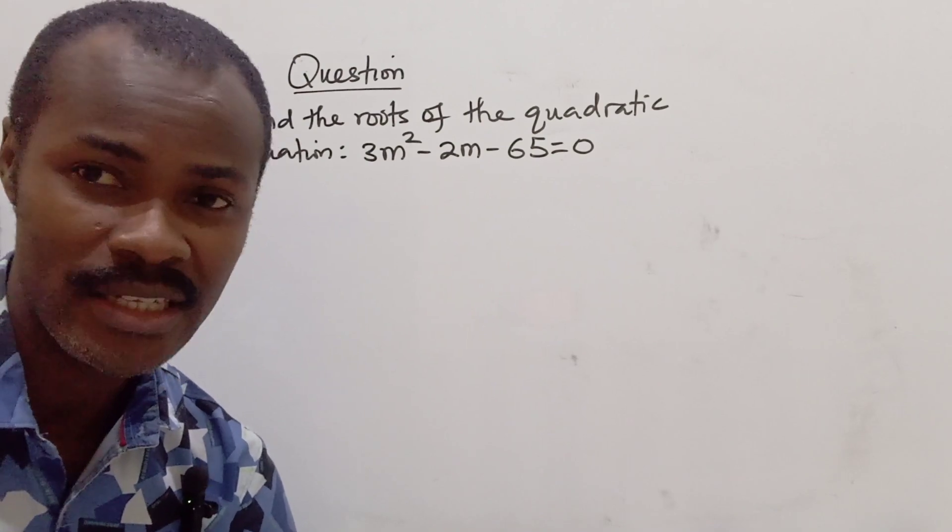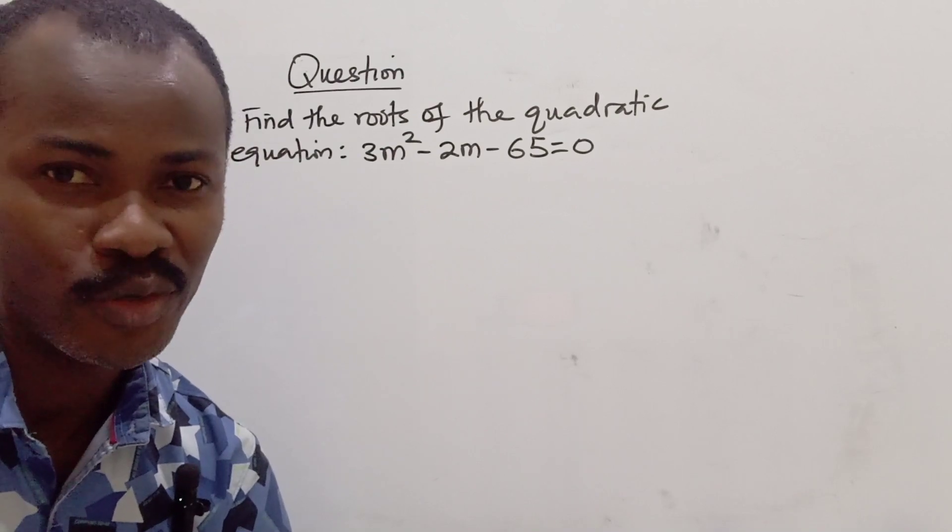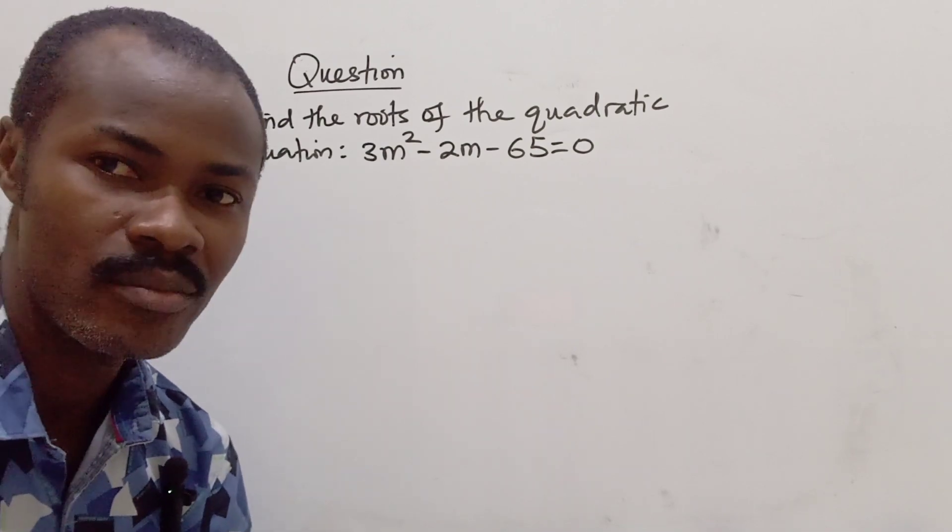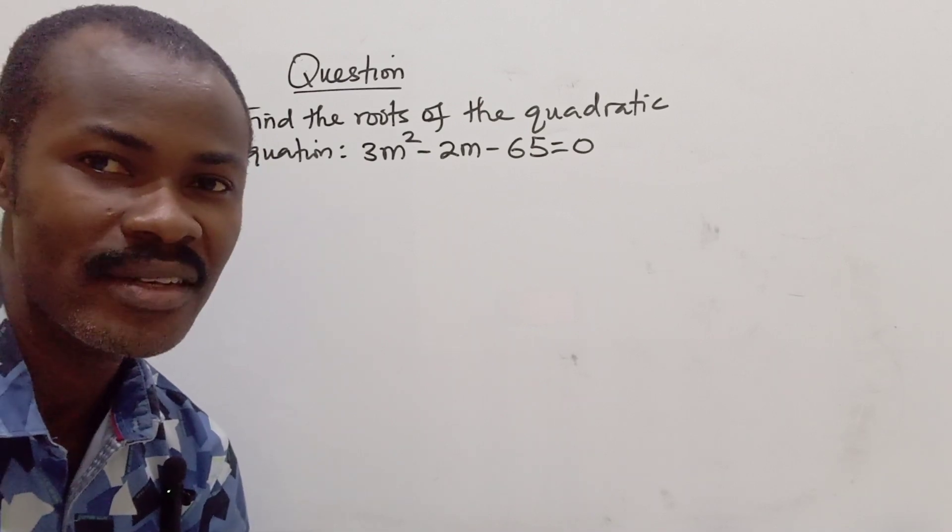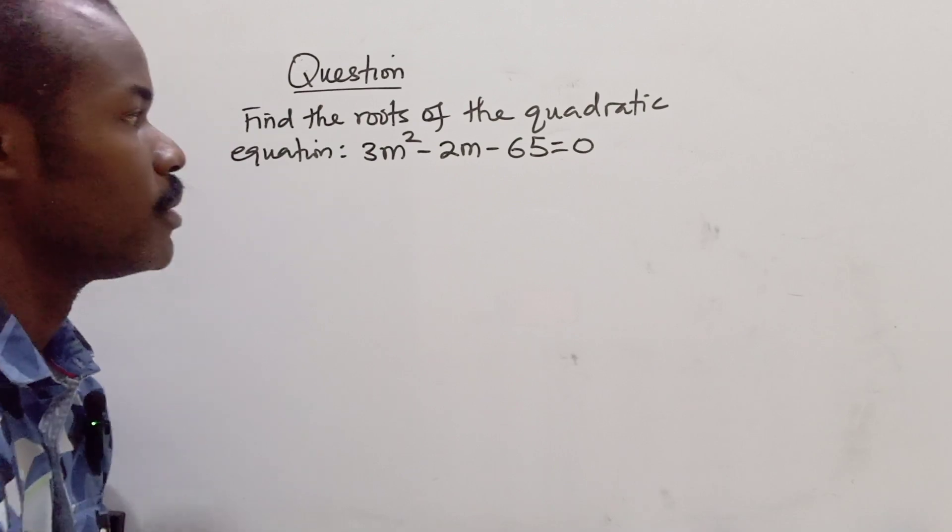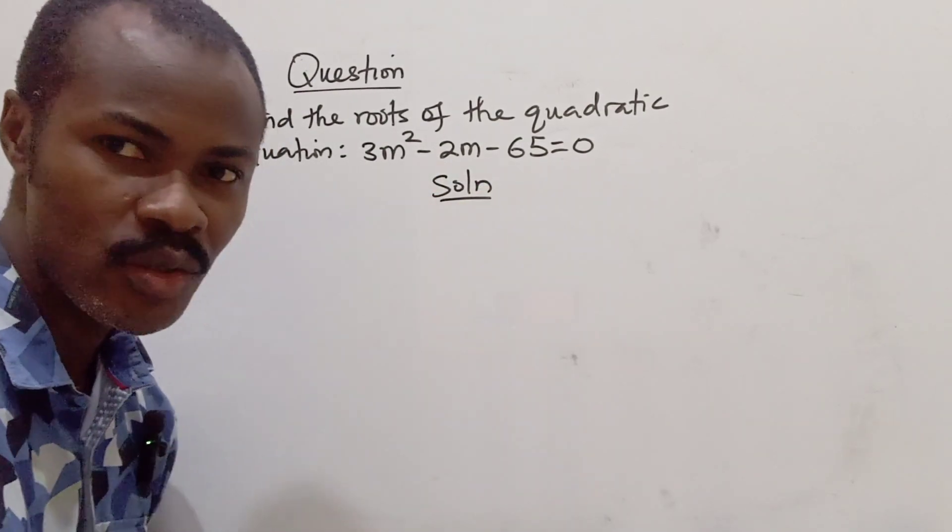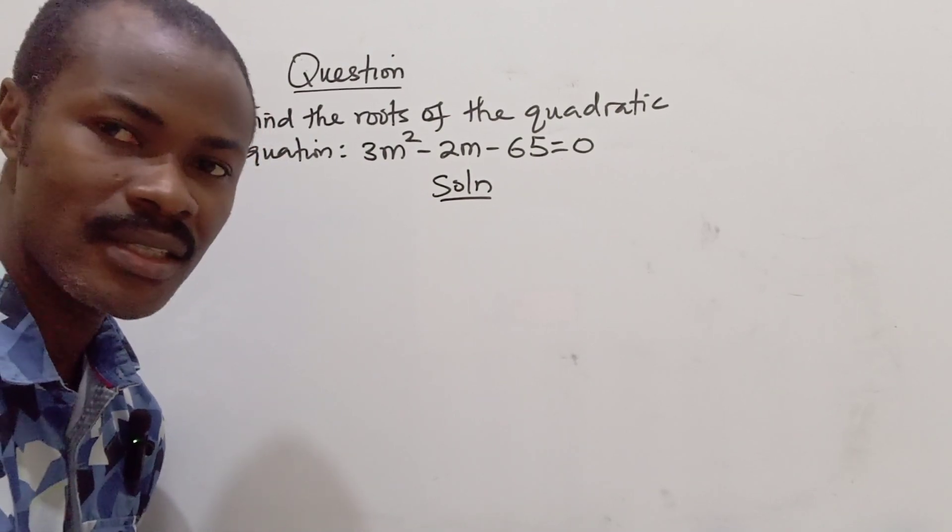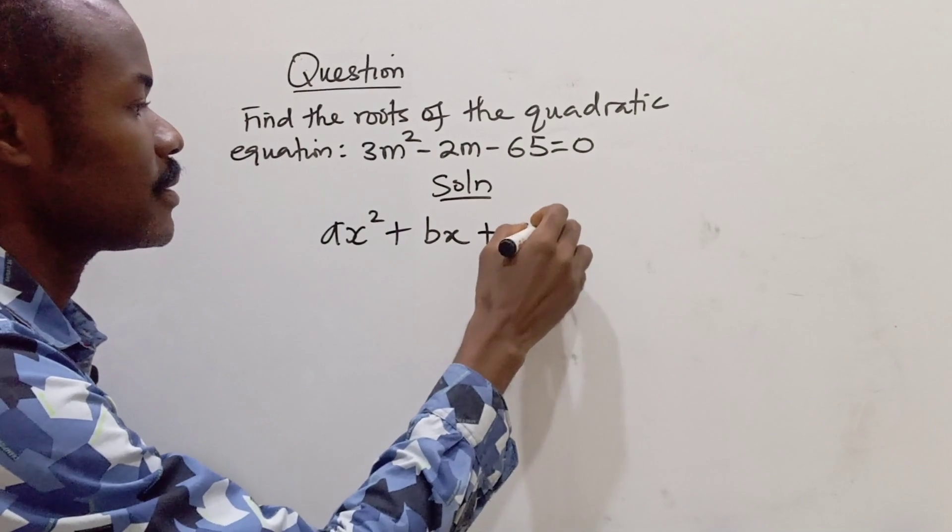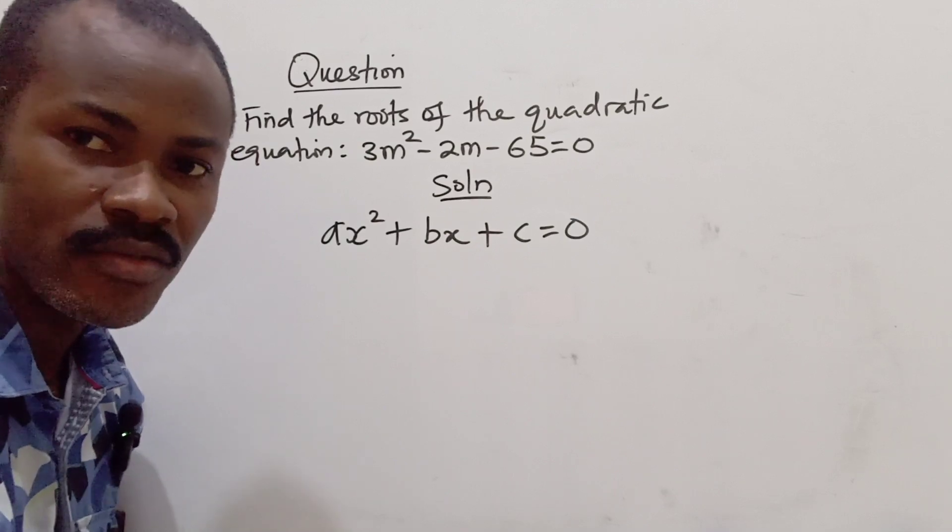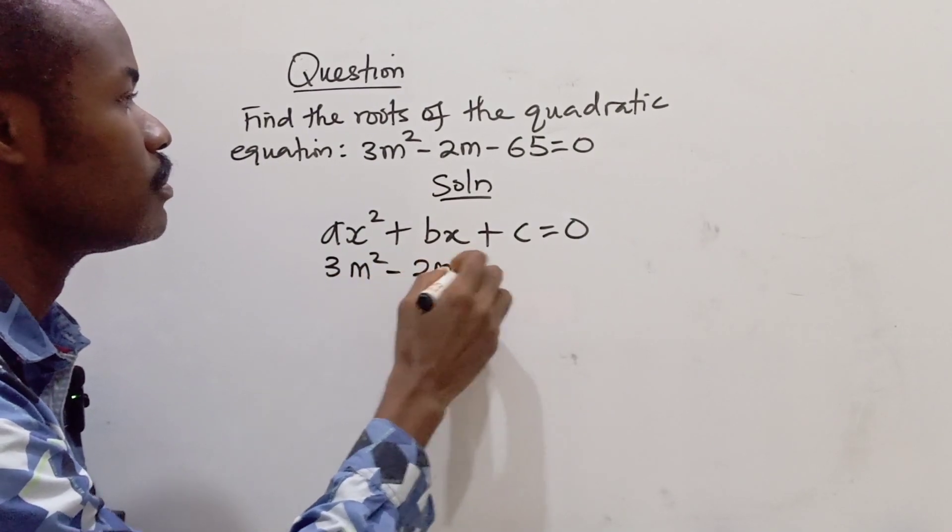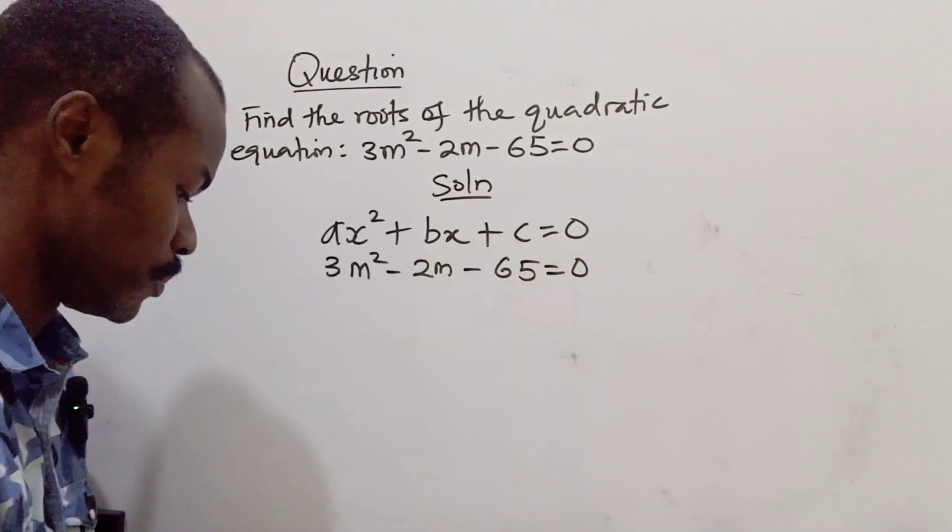Without wasting much of our time, let's get right into the problem for today. The equation is: find the roots of the quadratic equation 3m² - 2m - 65 = 0. So how do we solve this problem? First, I want to write the general form of quadratic equations: ax² + bx + c = 0.